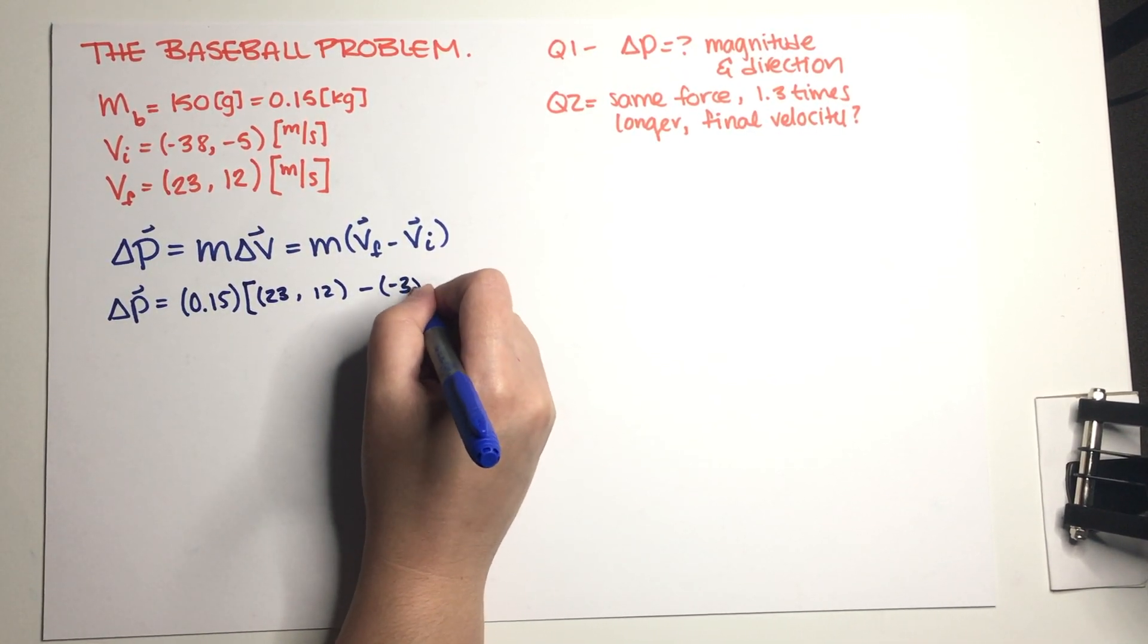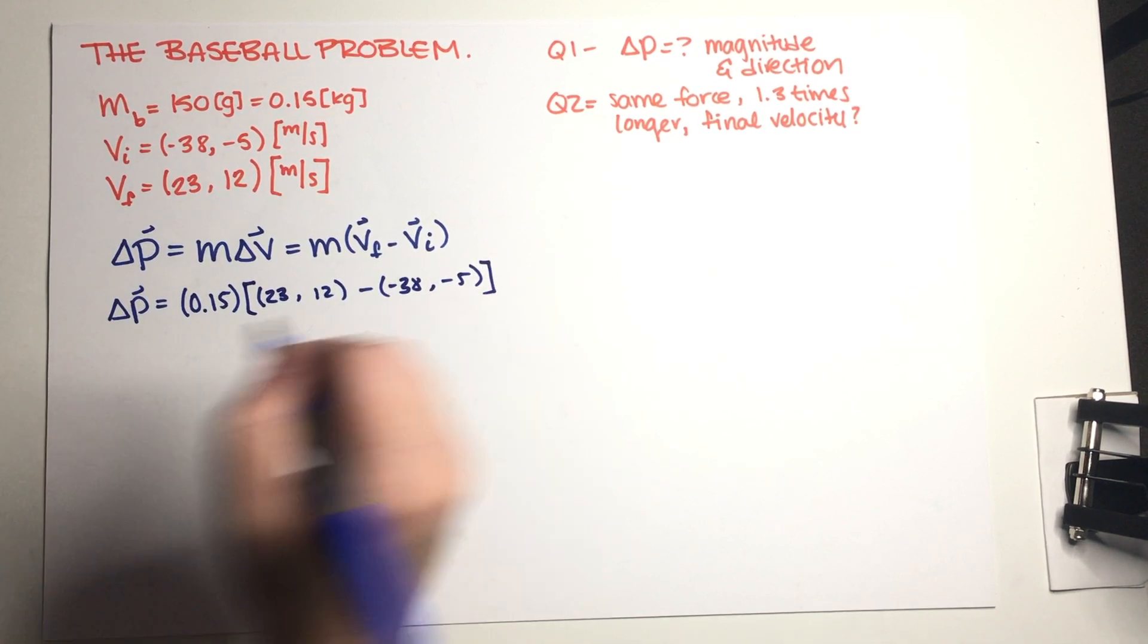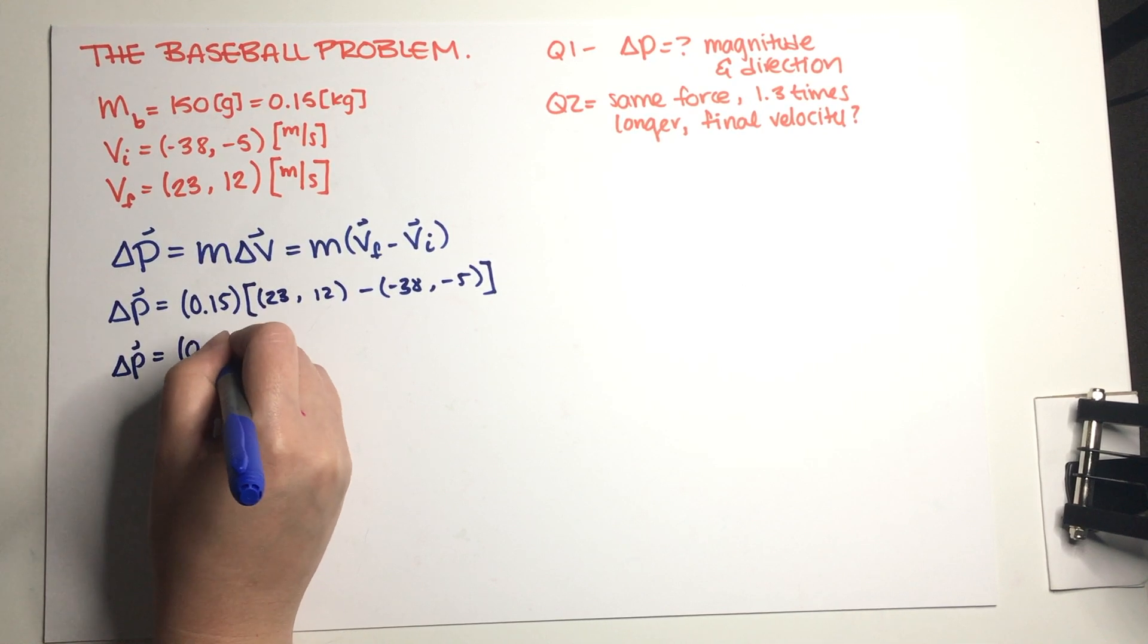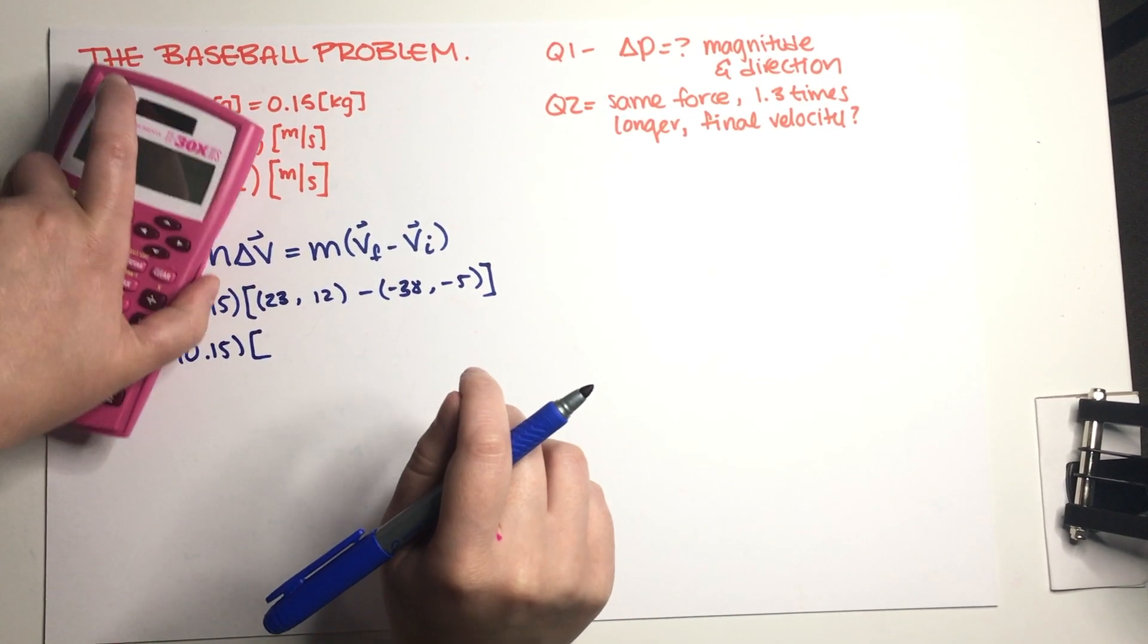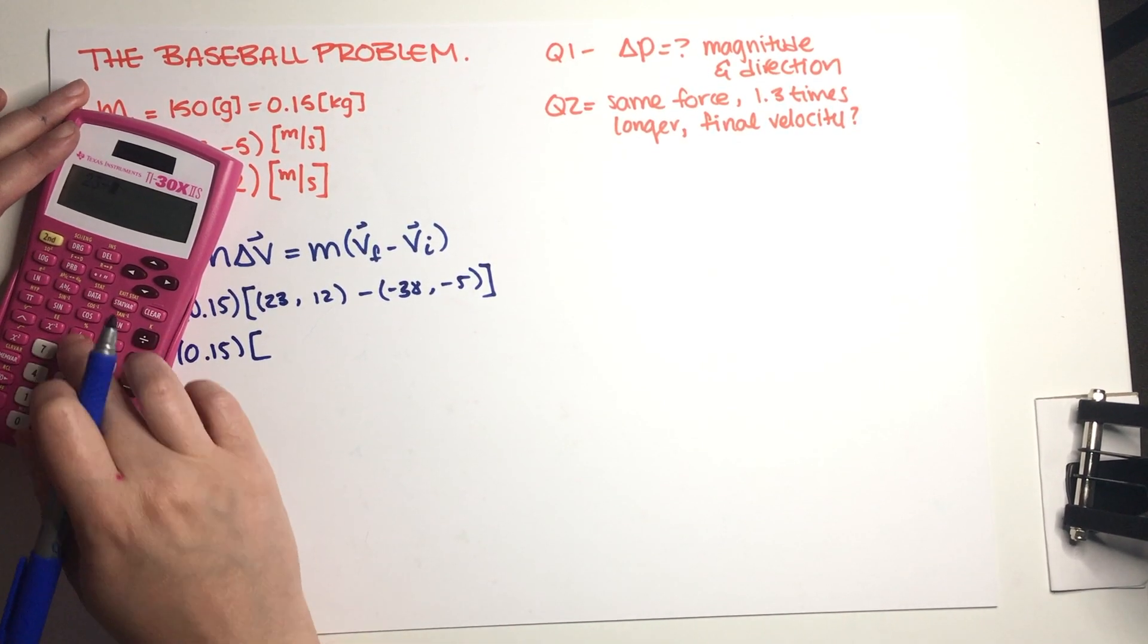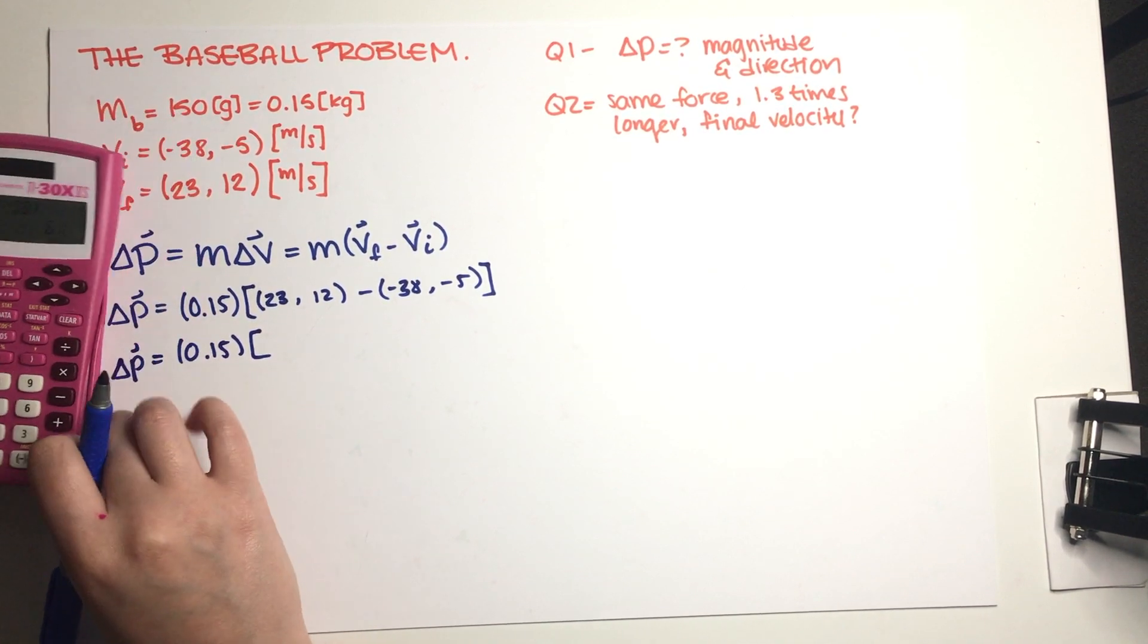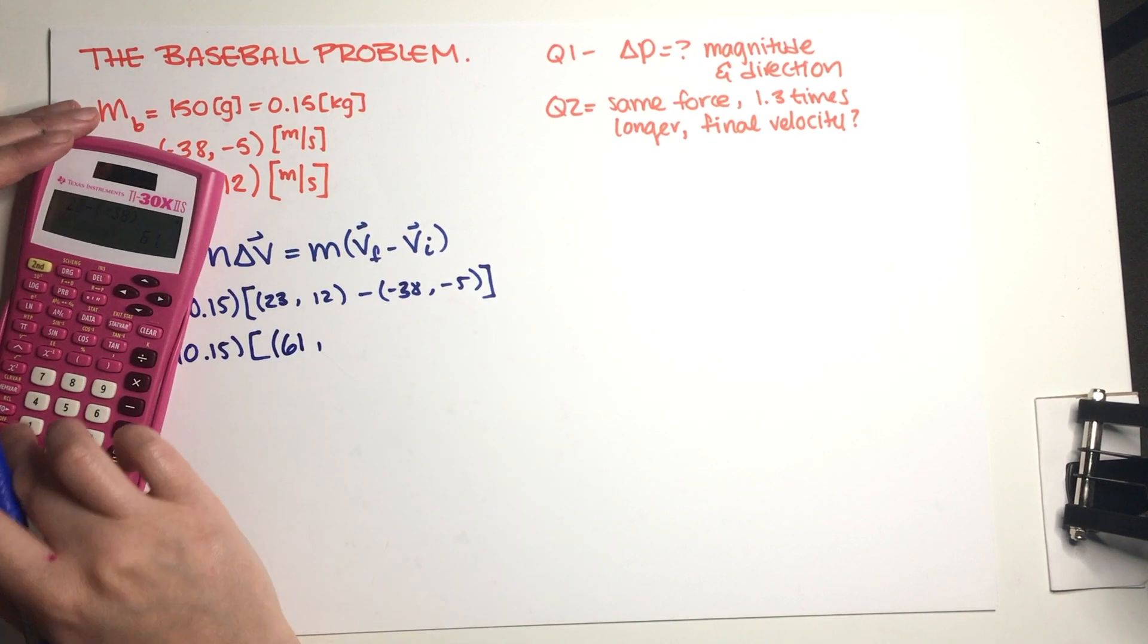So delta p is 0.15 and then this vector is... let me just grab a calculator. So this is 23 minus minus 38, that is going to be equal to 61, and then 12 minus minus 5, that is going to be equal to positive 17.